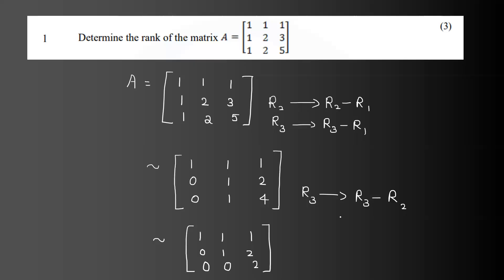What is the rank of the matrix? The rank of the matrix is 3. There are 3 non-zero rows, so the rank is 3.